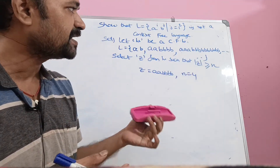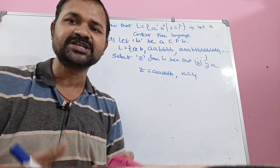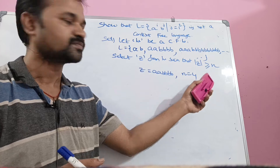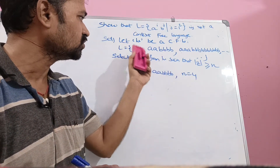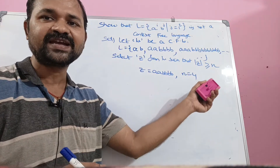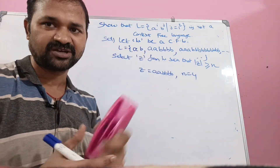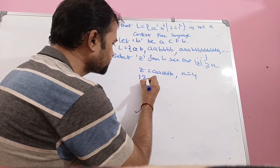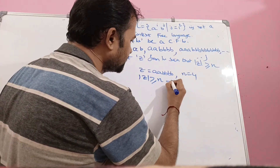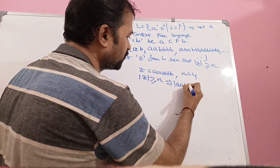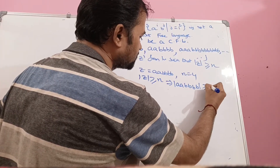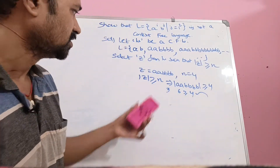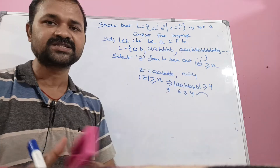We could also take the string with 3 a's and 9 b's, giving length 12, which is also greater than 4 — condition satisfied. But we cannot take the string 'ab' while assuming n = 4, because its length is only 2. We would need to set n = 2 to use that string. So let us confirm: |z| = 6 ≥ n = 4. Condition is true.